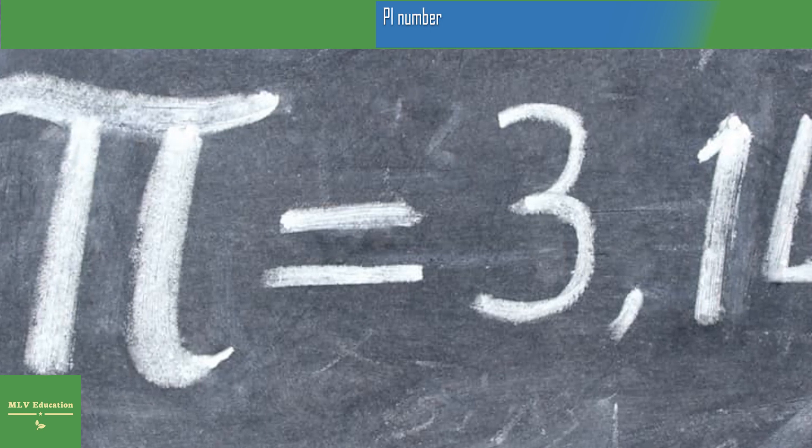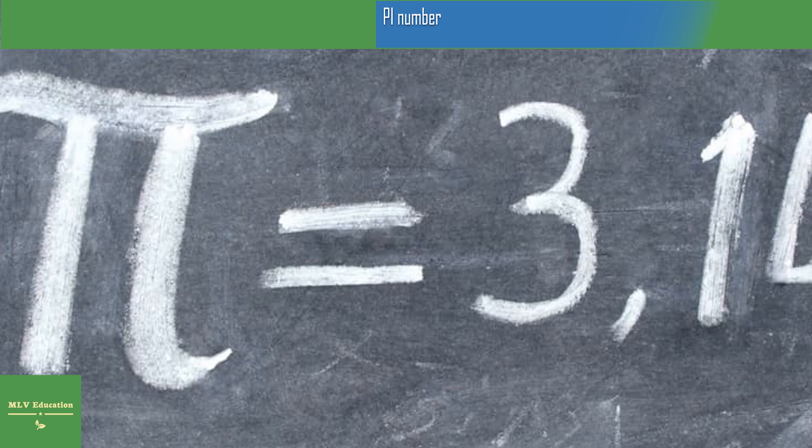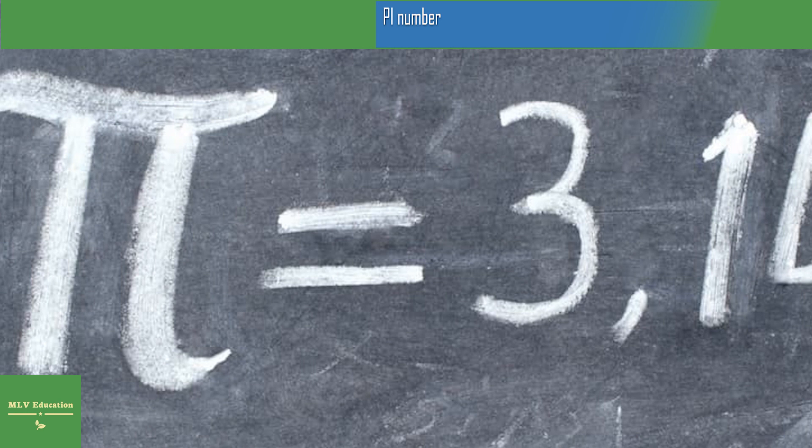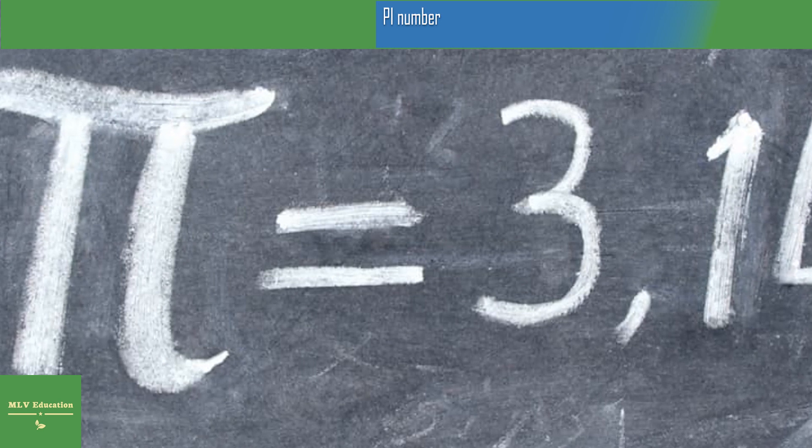A Japanese computer specialist in 1988 found 201 million 326 thousand decimals of Pi. The number Pi is not, however, a discovery of the modern era. In the Bible, reference is made to this number in connection with the model of a cast iron pool built for King Solomon for purification rituals by Hiram of Tyre.